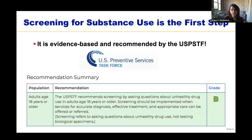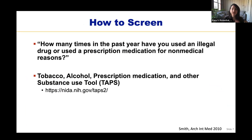The first step to addressing substance use disorder is identifying it. The USPSTF now recommends screening for unhealthy drug use in all adults age 18 and older. Simply asking the question, 'How many times in the past year have you used an illegal drug or used a prescription medication for non-medical reasons?' has been shown to be 100% sensitive and 73.5% specific for the detection of a drug use disorder.